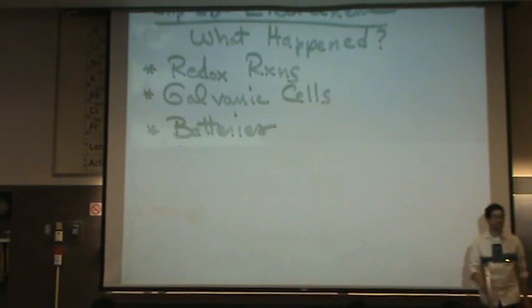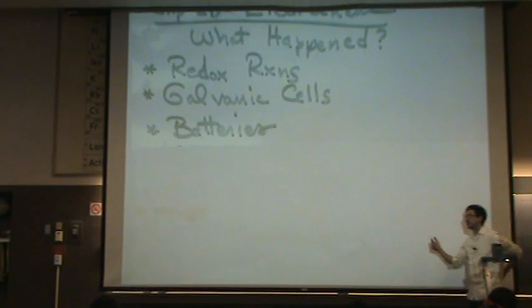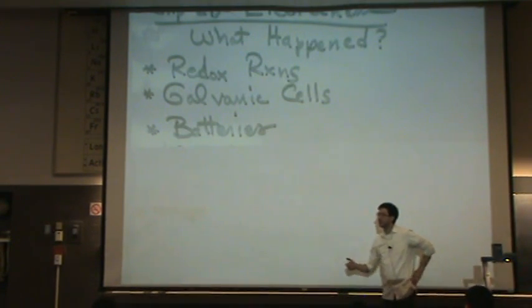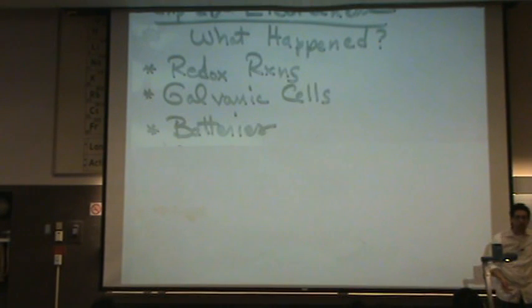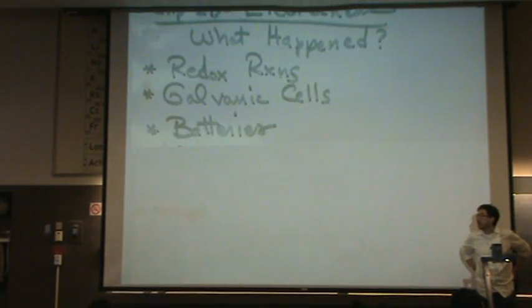We learned about batteries: the primary cell, secondary cell, and the flow cell batteries. So know the differences, know the cathodes and anodes of each, know that sort of thing, what they are used for.